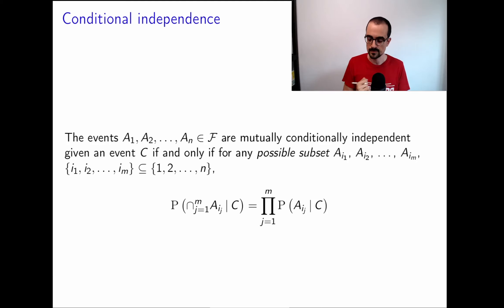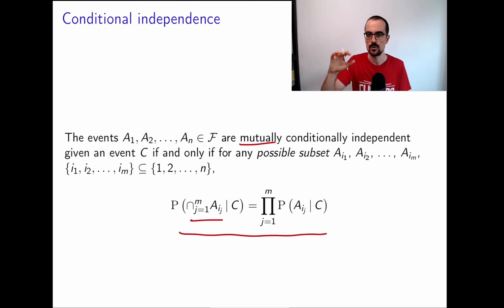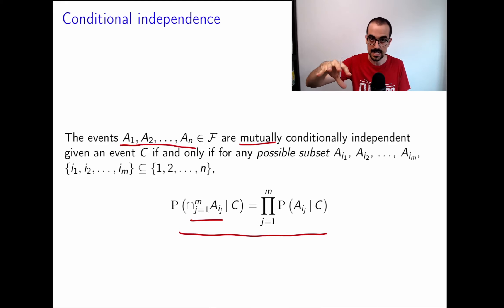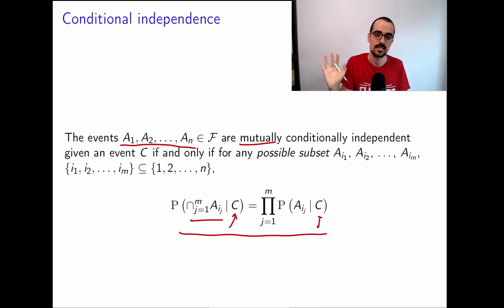Equivalently, P(A∩B|C) = P(A|C)·P(B|C). For multiple events to be mutually conditionally independent, we need the same condition to hold for any subset of m events: the probability of their intersection given C must equal the product of the individual conditional probabilities given C, for any possible choice and any m ≤ n.